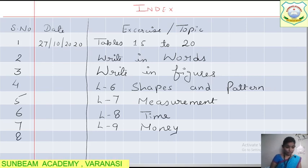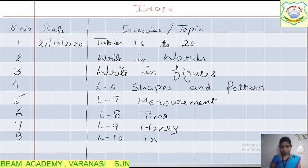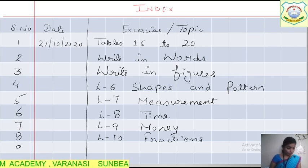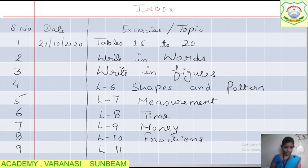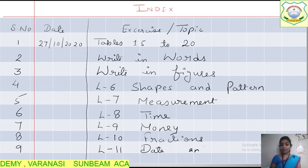Seven — Lesson Number 9 is Money. Eight — Lesson Number 10 is Fractions. And number nine, the last chapter, is Lesson 11, Data Handling.